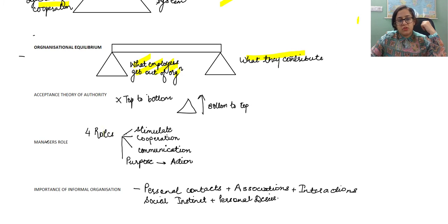So now we come on to the manager's role. He says the manager has four roles. Firstly, to stimulate people to work according to their potential. Next, to ensure cooperation between employees, to ensure a proper communication channel is set up and to ensure that purpose of the organization is translated into action by the employees.